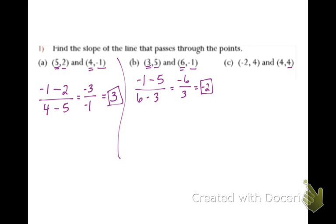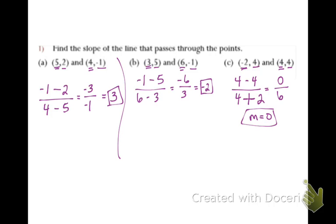Now for the last one, we're going to take y2 minus y1 all over x2 minus negative 2. Be careful here, because a lot of times people forget to bring this sign in — that's a negative 2 right there. So we need to make sure that we put minus negative 2 in there. 4 minus 4 is 0. Anytime you have minus and negative, that just becomes one big plus sign. So 4 plus 2 here is 6. 0 divided into 6 parts is going to be 0. So for this one, our slope is 0. Remember, if the 0 is on the bottom, it's undefined, because we can't divide by 0.